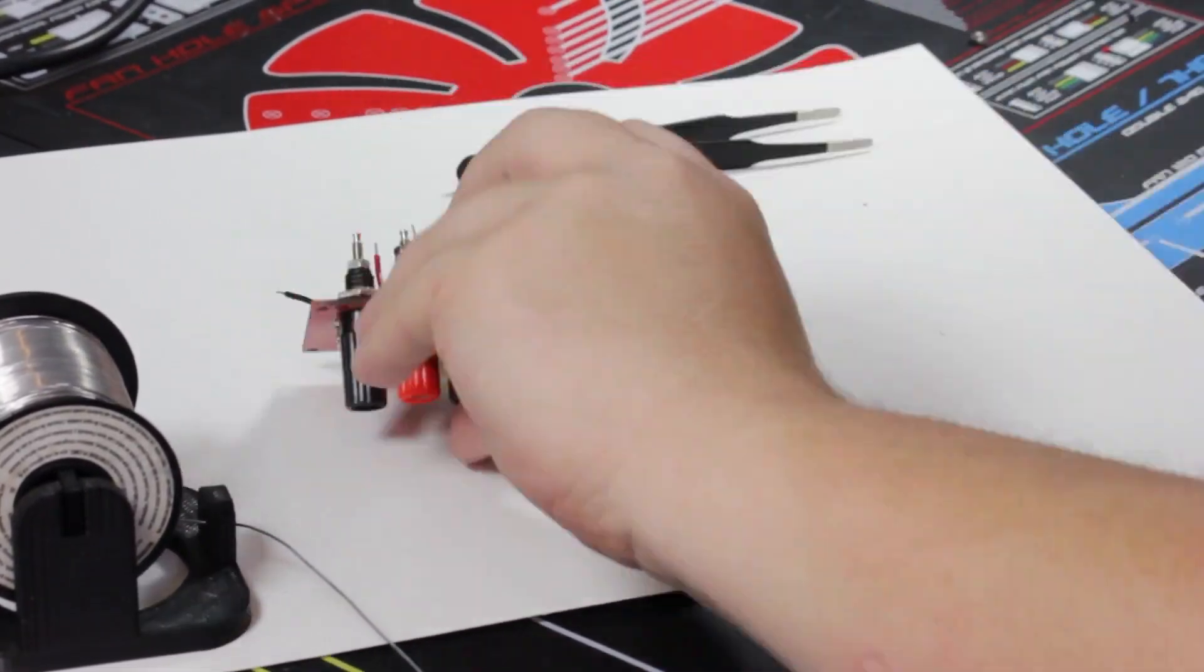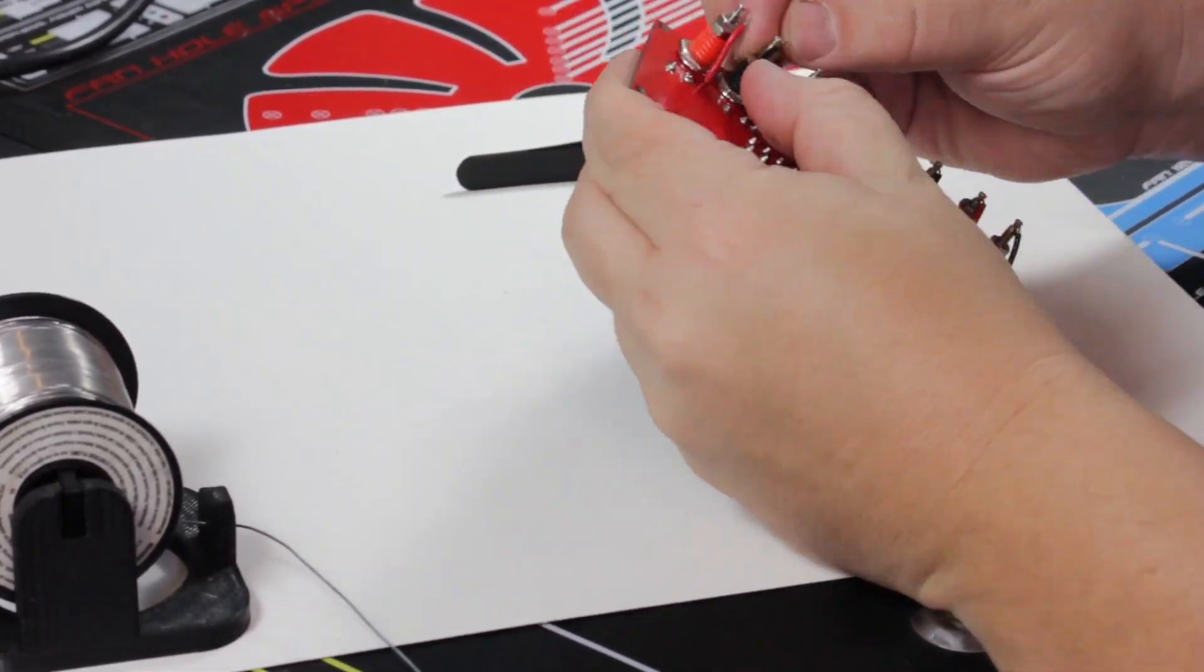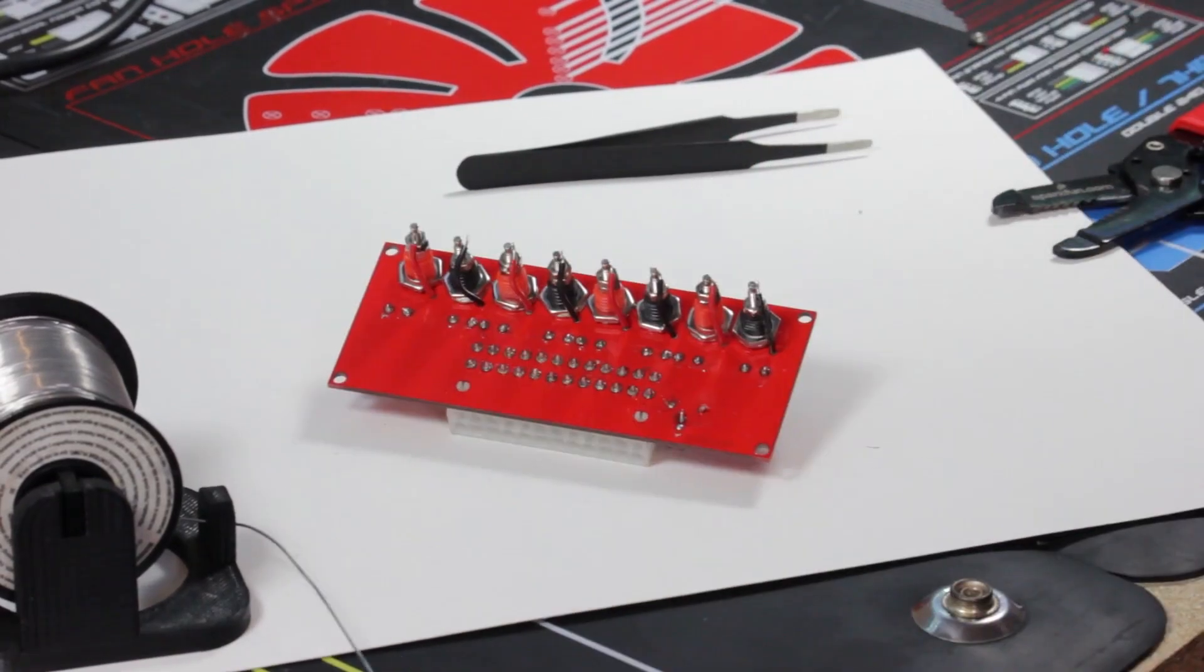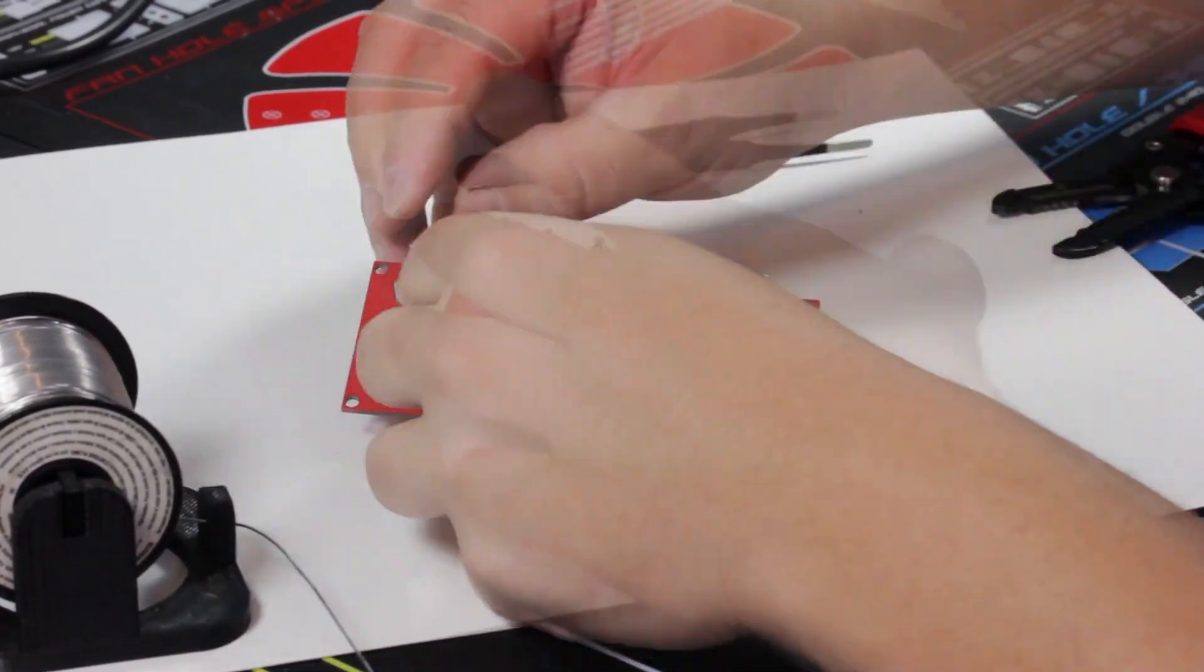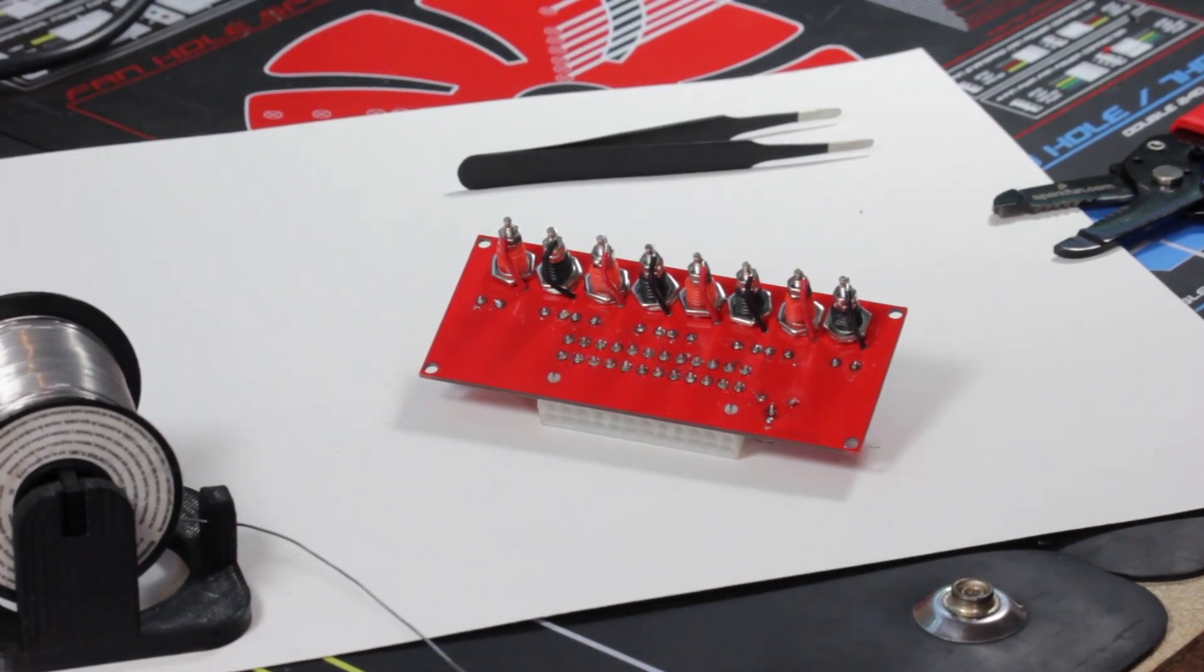With all of the posts secured to the board, bend the wires we soldered to the circuit board so that the other exposed end is making contact with the metallic end on the correct binding post. The closer the better. Once all of the wires have been bent and are making contact with the top of the binding posts, we can begin soldering them together.